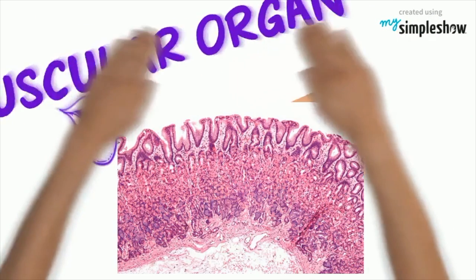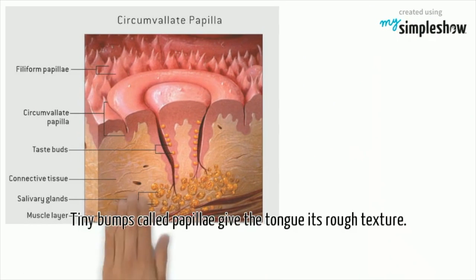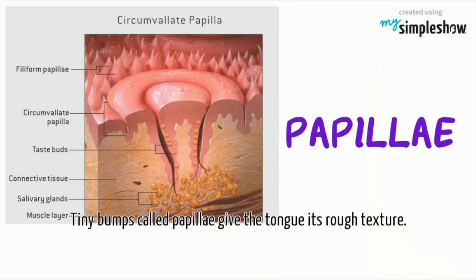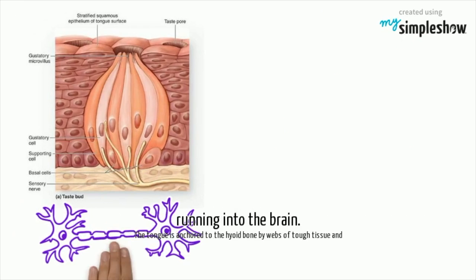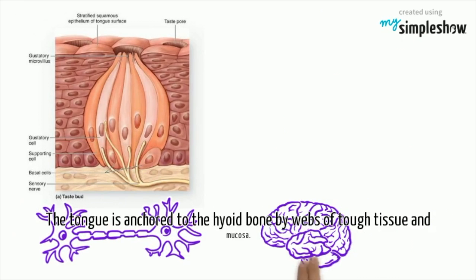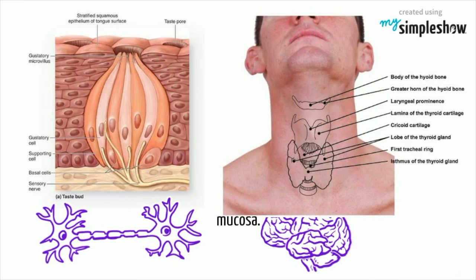The tiny little bumps called papilla give the tongue its rough texture. Your taste buds are collections of nerve-like cells that connect to nerves running into the brain. The tongue is anchored to the hyoid bone by webs of tissue and mucosa.